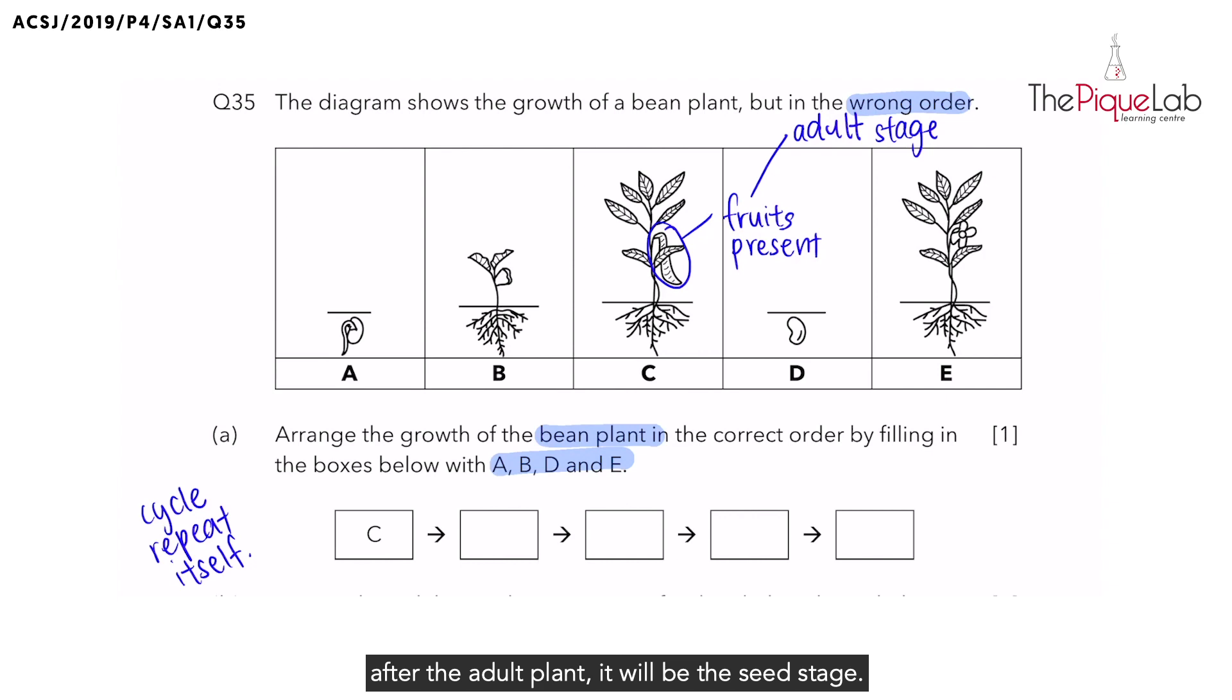So at this point now they get it. They're like, oh okay, so after the adult plant is the seed stage, but it doesn't mean that the adult plant becomes a seed. It means that now the adult plant has fruits, the fruits contain seeds, and that seed will actually grow into a new plant.